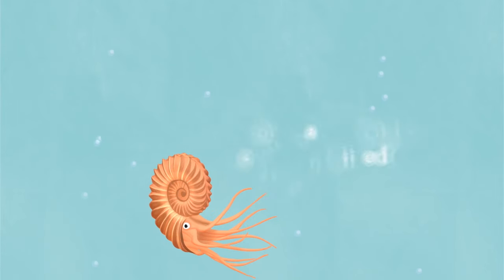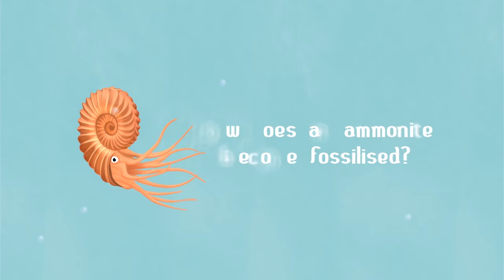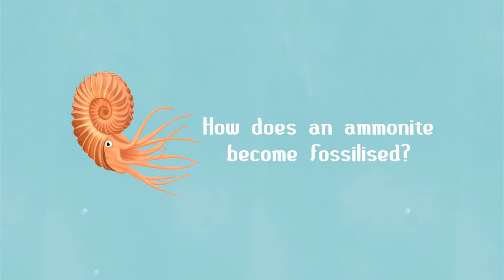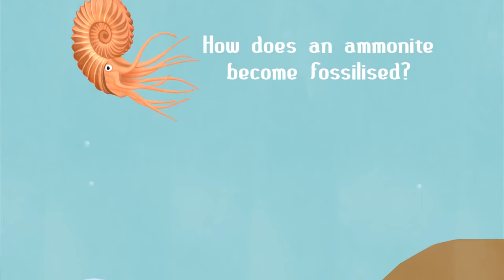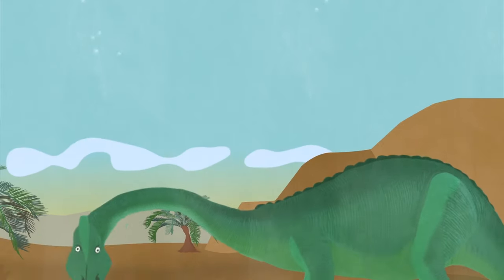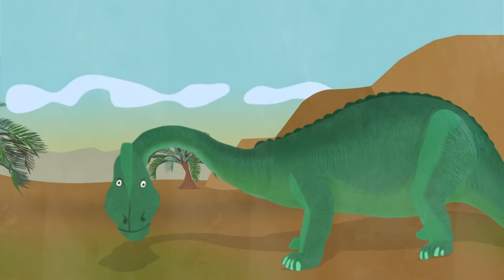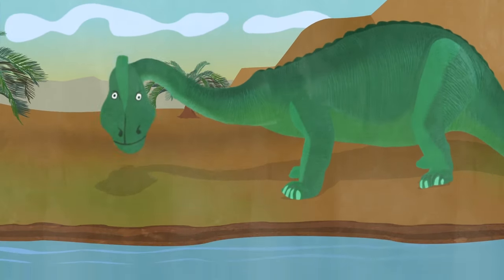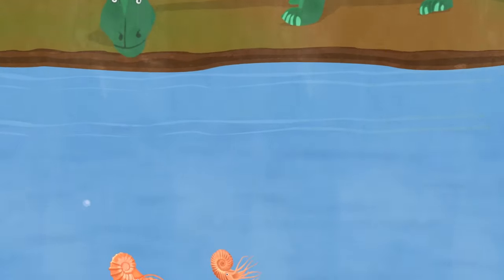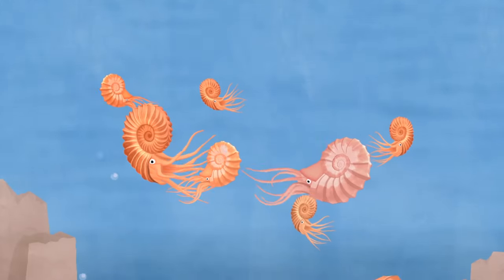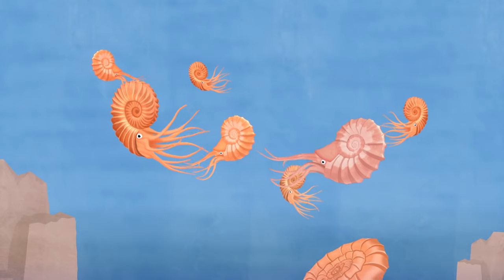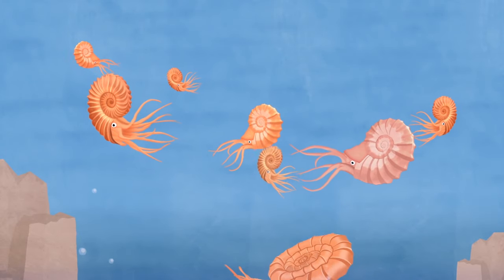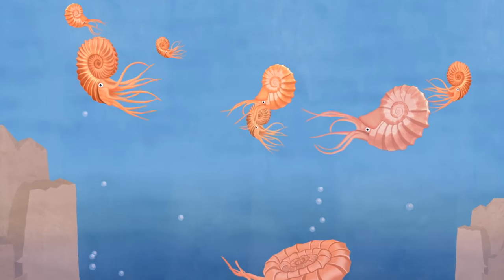How does an ammonite become fossilised? Around 150 to 200 million years ago, in the Jurassic period when dinosaurs roamed the Earth, these shelled, squid-like creatures were plentiful in oceans.